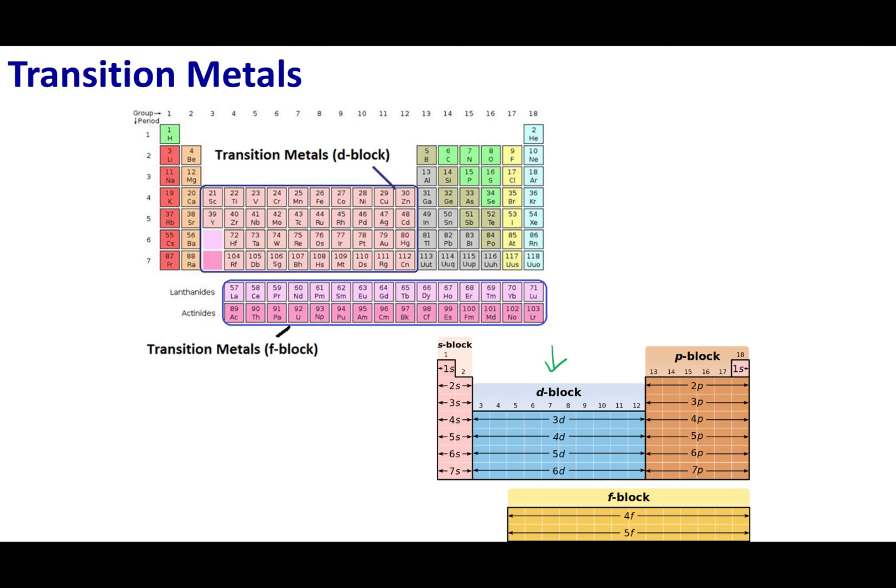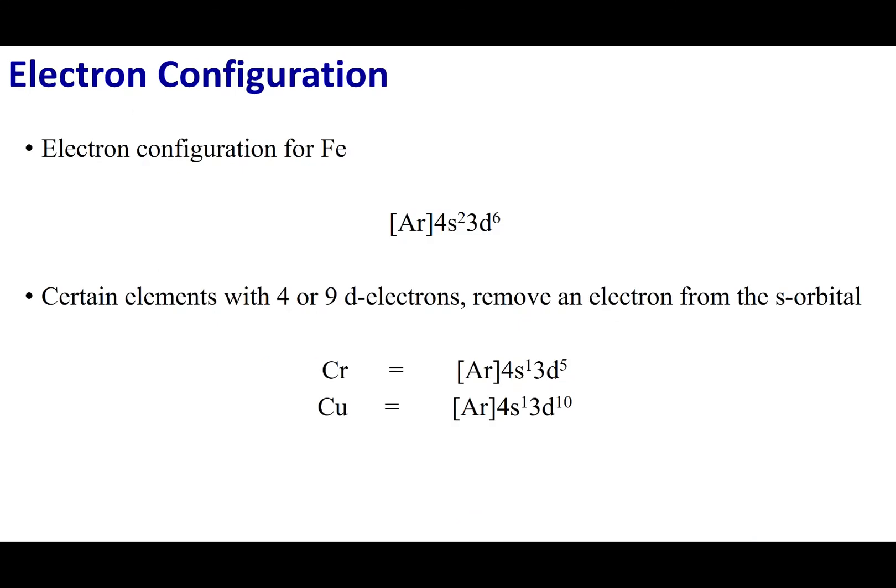The transition metals are also here on the bottom offset on our periodic table. This is the f-block transition metals and they go 14 across for the 14 electrons that go into an f-orbital. So let's remind you about how to do electronic configuration, especially for the transition metals.